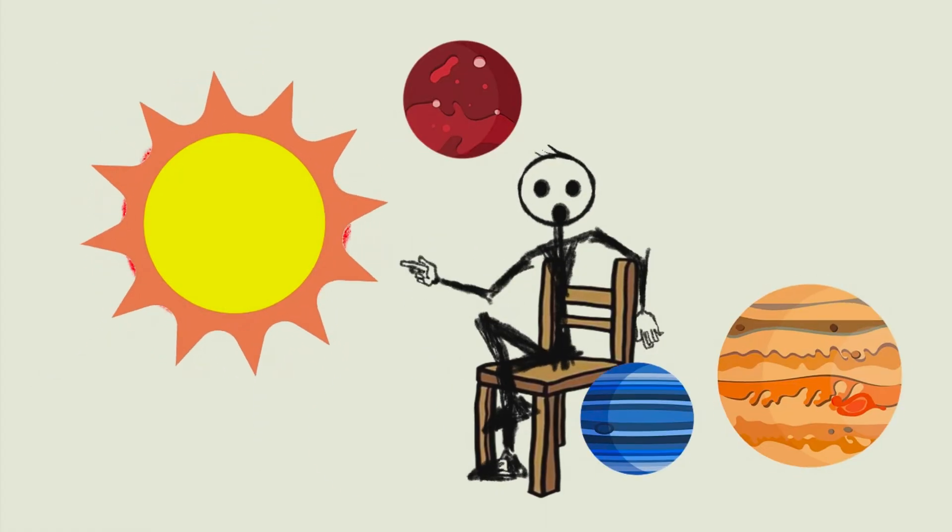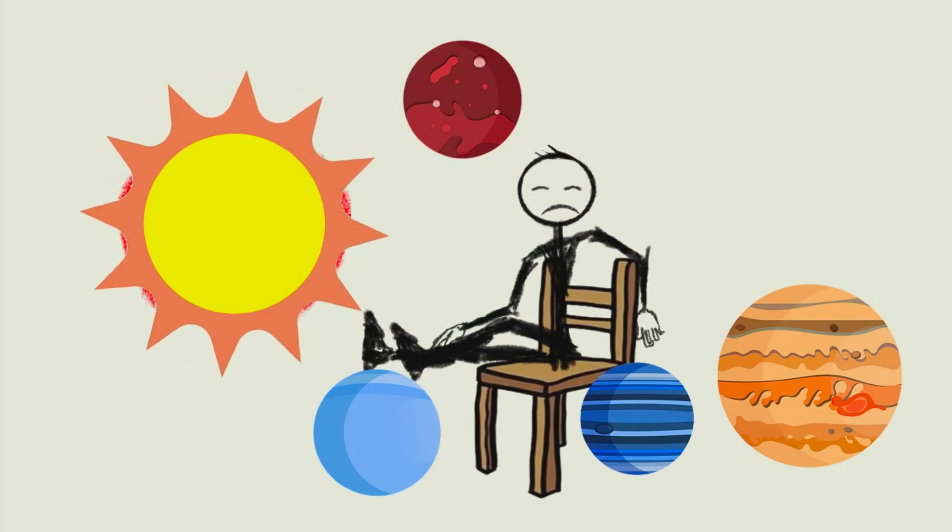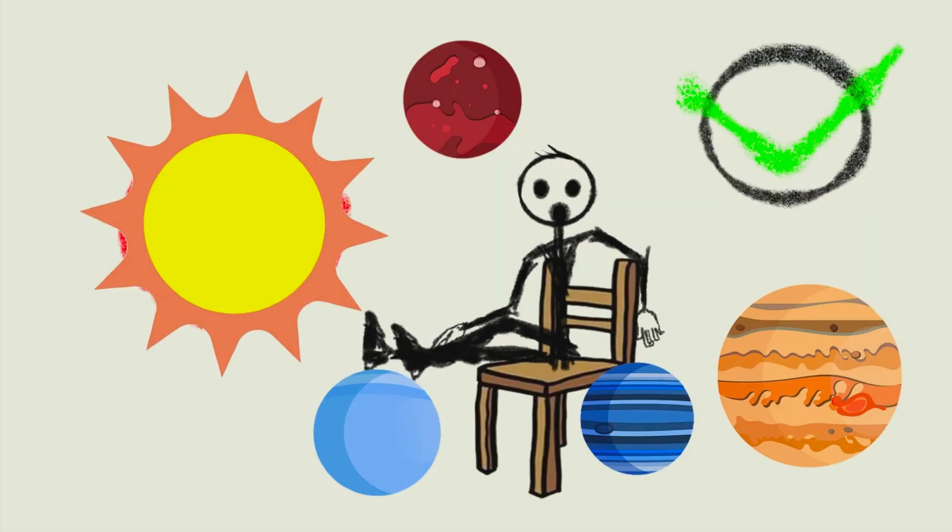That is why all planets, stars, and large celestial bodies are spherical in shape. It is the most stable and energy-efficient configuration.